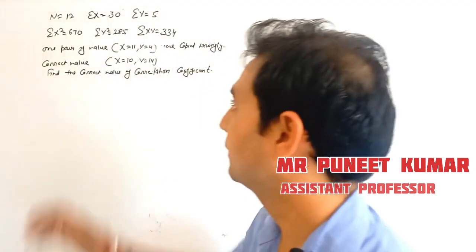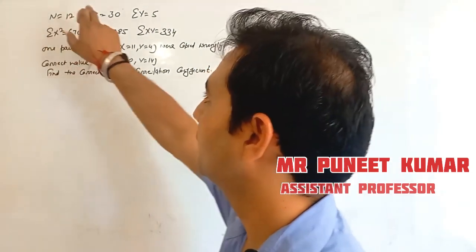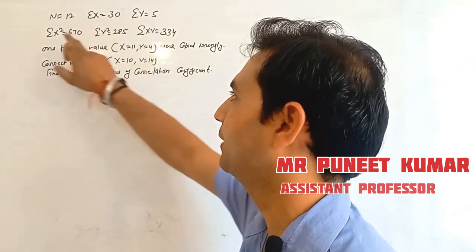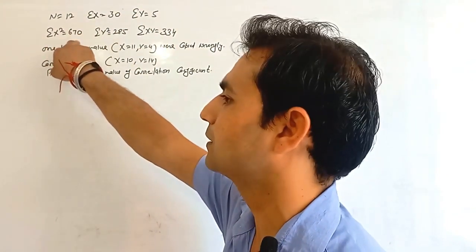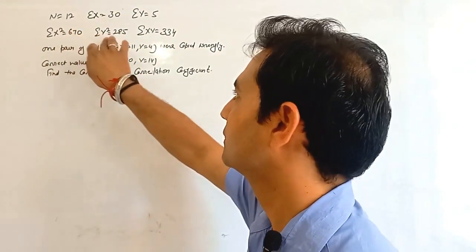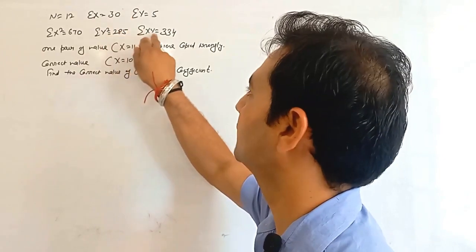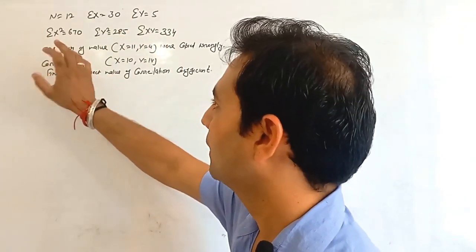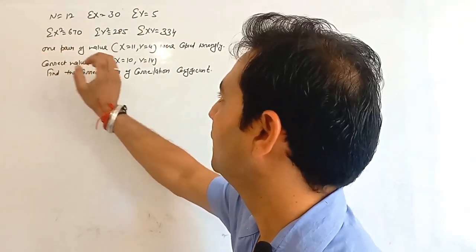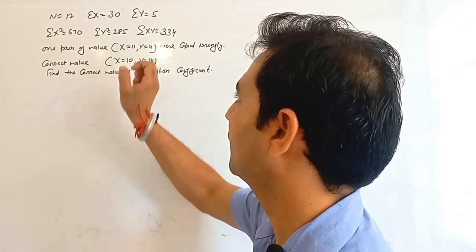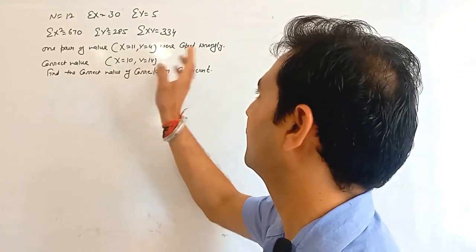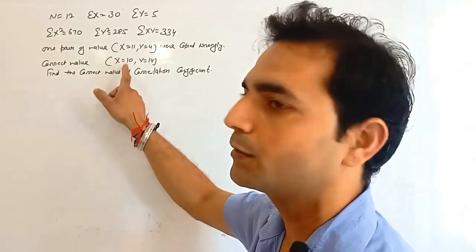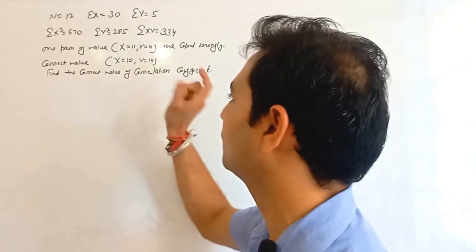Here is one question: n is equal to 12, summation x is equal to 30, summation y is equal to 5, summation x square is equal to 670, summation y square is equal to 285, summation xy is equal to 334. One pair of values x equal to 11, y equal to 4 were copied wrongly, and the correct values are x equal to 10 and y equal to 40.